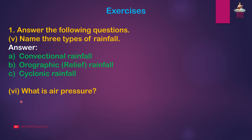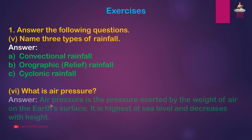Sixth, what is air pressure? Answer: Air pressure is the pressure exerted by the weight of air on the earth's surface. It is highest at sea level and decreases with height.